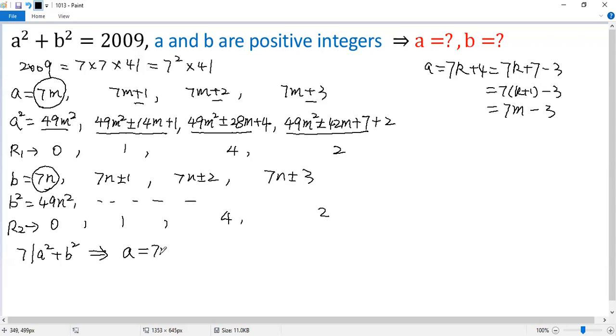So I can write a as 7 times m, b equals 7 times n. Then we can plug in the given equation.